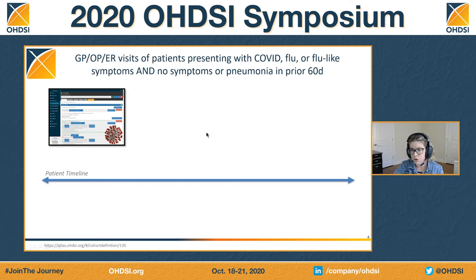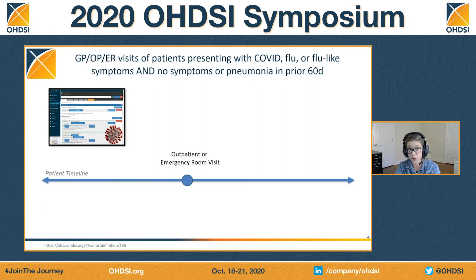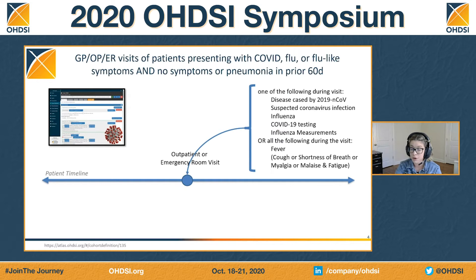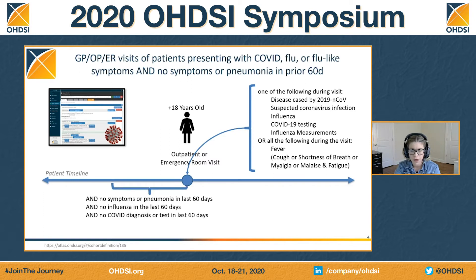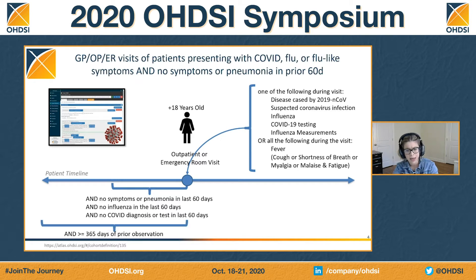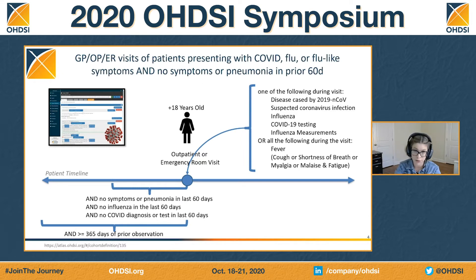I'm going to walk through it. This definition, looking for COVID-19 patients, started by looking for outpatient or emergency room visits. During that visit, we wanted to see certain conditions or measurements happening. We also wanted the patients to be a certain age. We also didn't want to see COVID-like symptoms before the index, and we wanted the people to have a certain amount of time within the database.